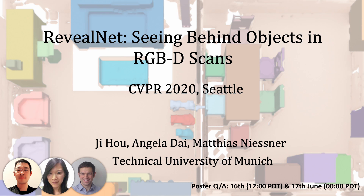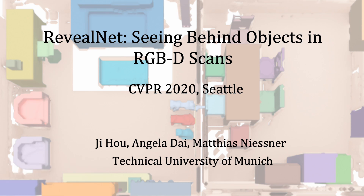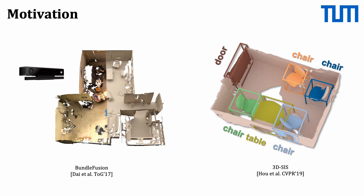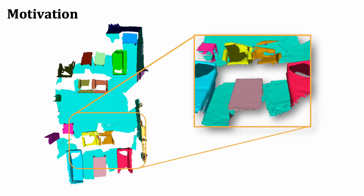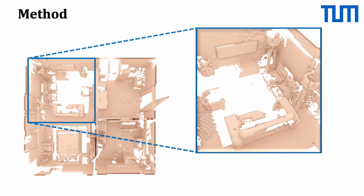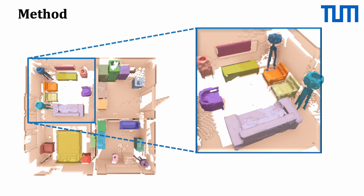We introduce ReviewNet on the instance completion task. With commodity sensors, we can do reconstruction, and previous works focus on understanding the reconstruction, for example instance segmentation. However, the geometry is not perfect. If we look closer, there are holes on objects.